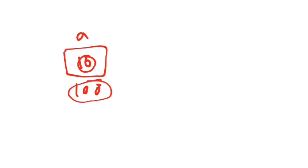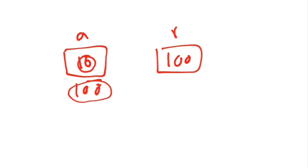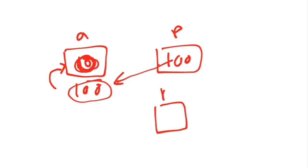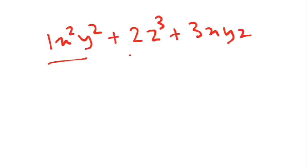You need to know about pointers. Suppose you want to access the content at a memory location — you first access the address, and that address is stored in another variable called a pointer. To access the content you use the address to reach it. A null pointer is a pointer that does not point to any location.